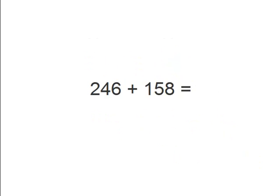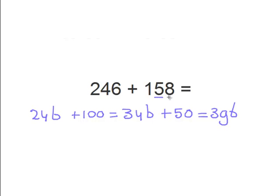Let's solve another problem. 246 plus 158. So again remember, pick the way to solve the problem which is easiest for you. But I'll show you a new way now. So 246 plus 100 equals 346. And now we have the 5, which would be 50. So we can do 346 plus 50 equals 396.